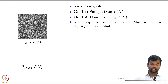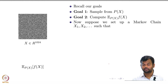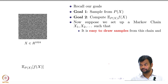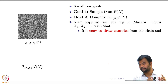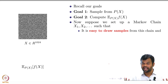Suppose we set up a Markov chain X1, X2, and so on, such that the stationary distribution of this Markov chain is P of X. Further, it should be easy to draw samples from this chain. There is no point in constructing a chain such that sampling from it is as hard as sampling from the original distribution, which is what we saw in the earlier setup — because at every time step I had to compute mu1, mu2, and so on, which required a very expensive matrix multiplication.